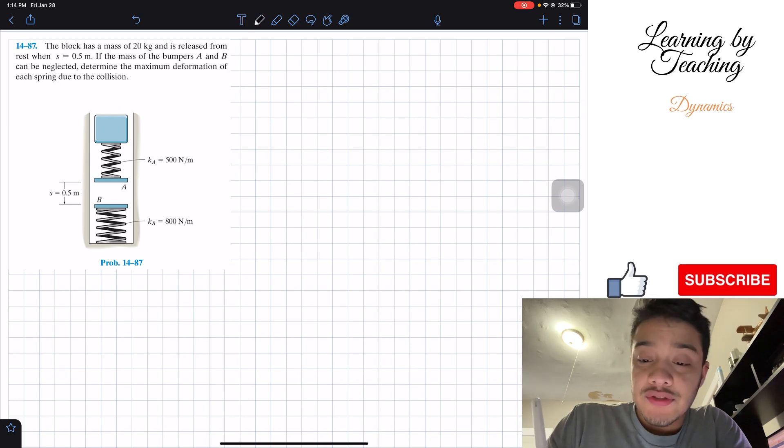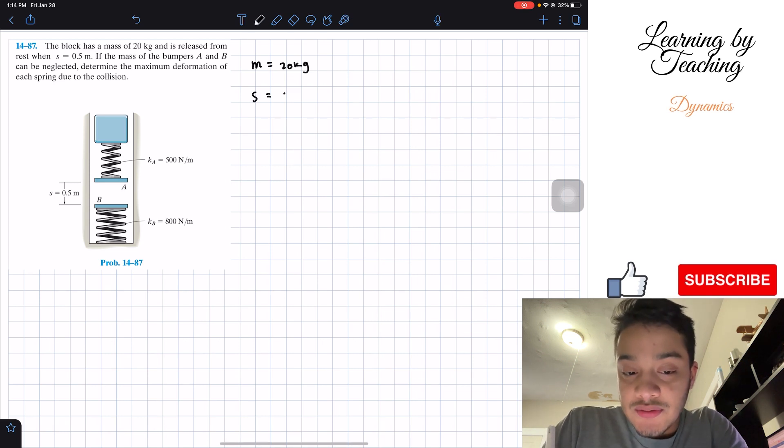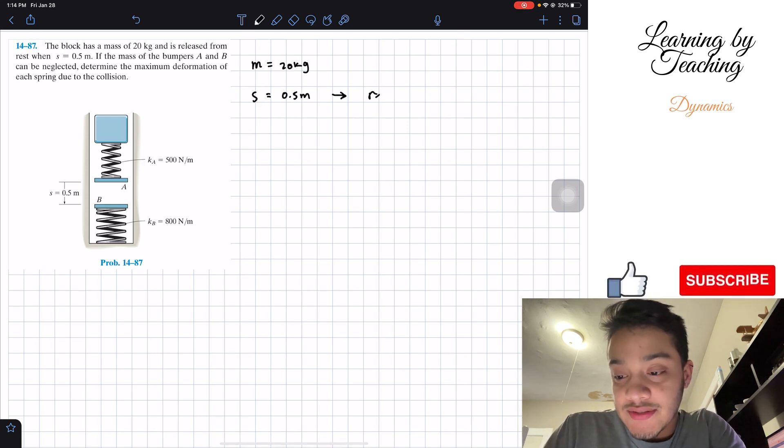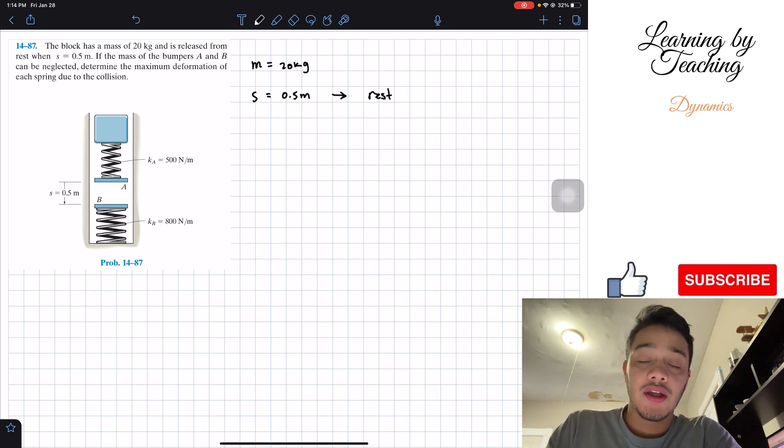What I like to do is write out my givens. We're given that the mass of the block is equal to 20 kilograms. We have that the gap between these two springs is equal to 0.5 meters, and at this moment the system is at rest, meaning that the velocity is zero, acceleration is zero. They're also giving us the stiffness coefficient for spring A and spring B, so 500 newtons per meter and 800 newtons per meter respectively.